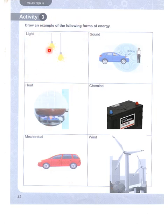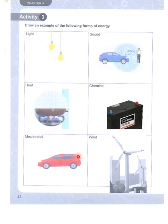So now we have completed this activity by drawing: the light energy which is coming from the electrical bulbs, the sound energy which is coming from the horn of the car, then the heat energy which is coming from the cooking range, then the chemical energy coming from the battery, then mechanical energy from the car, and wind energy.